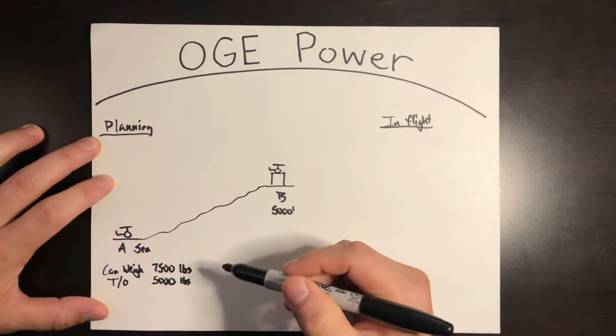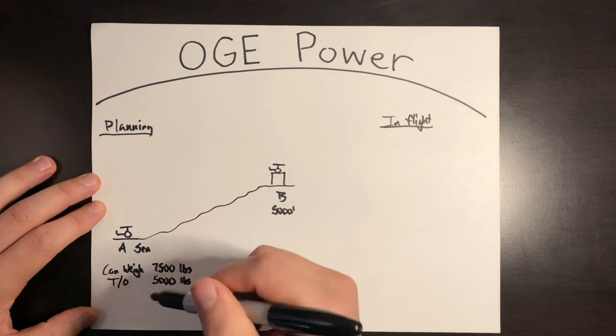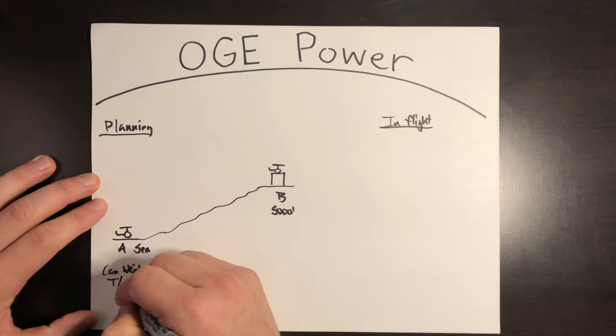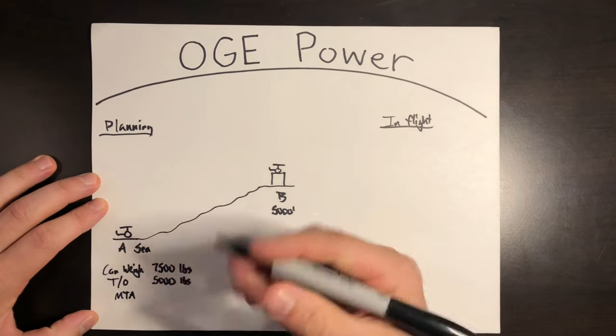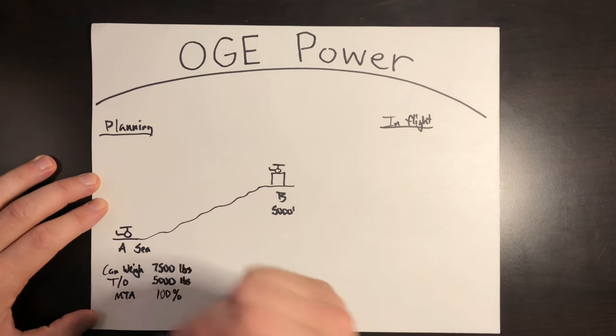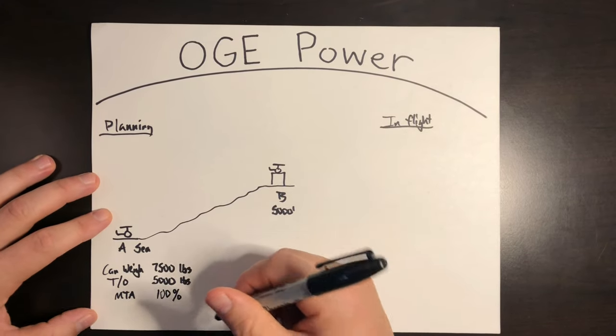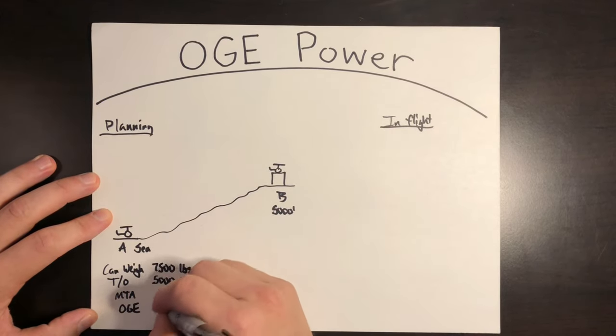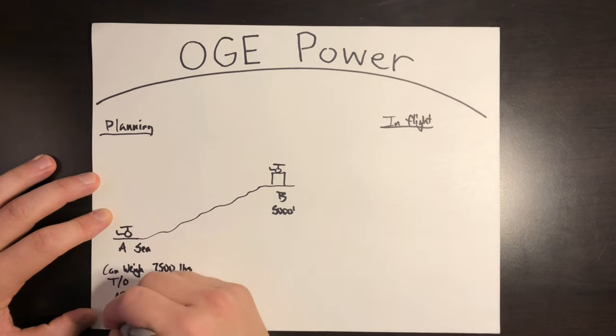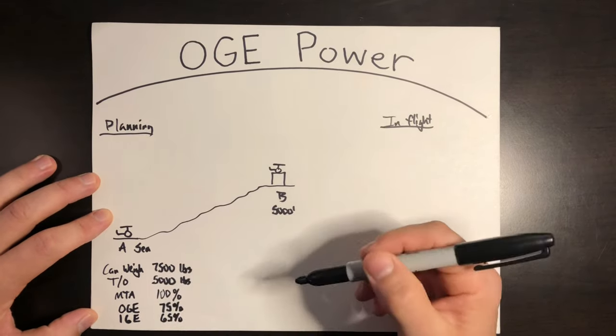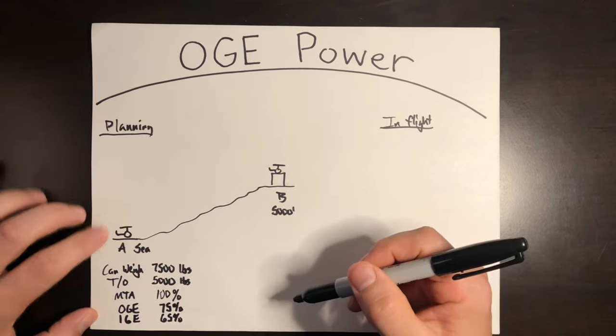So it can weigh as much as 7,500 and still have OGE power. I'm planning to take off at 5,000. The max torque available MTA for this environmental condition that I calculate is say 100% at takeoff. I can pull up to that number. My OGE power that I calculate comes out to be 75%. And my IGE or my in-ground effect calculates at 65%. So I've got a good healthy margin there. I can pull up to 100% and those are my numbers that I need for the takeoff.